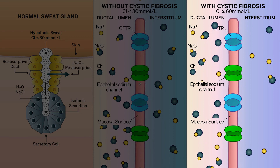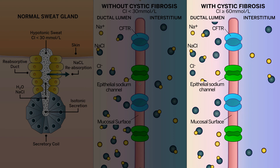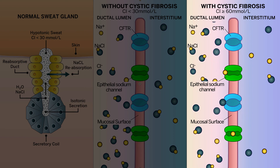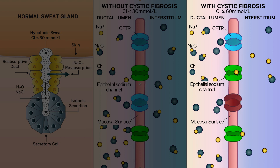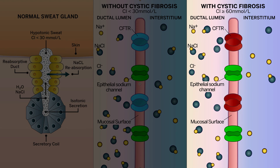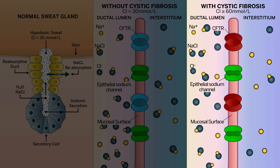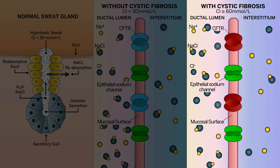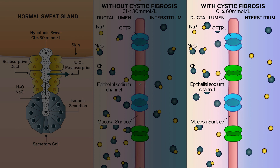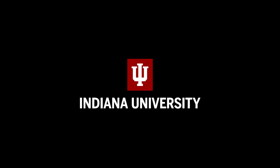For people who have partial CFTR function, either because of their CF genotype or due to CFTR modulator treatment, some chloride may be reabsorbed, resulting in sweat chloride measurements often in the intermediate range between 30 to 59 millimoles per liter.